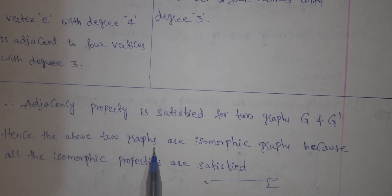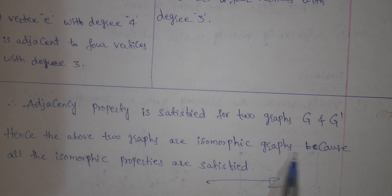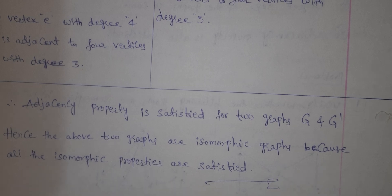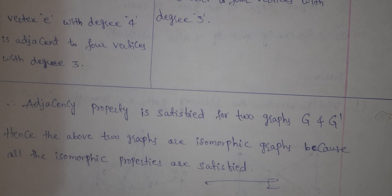Hence the above two graphs are isomorphic because all five isomorphic properties are satisfied. Don't forget to like and share. Thank you.